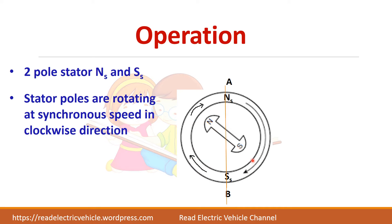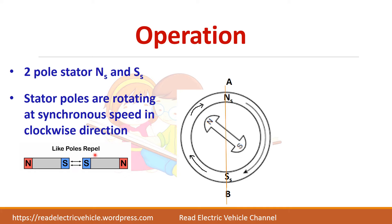Now take the rotor — suppose initially it is in this position. Here we have a north pole and here also a north pole. We know like poles will repel each other. This stator north pole is rotating in the clockwise direction, so this rotor will try to move away from this north pole because like poles oppose each other. Here you have south and south, so if the stator pole is rotating in this direction, the rotor will move away — its direction is anticlockwise.